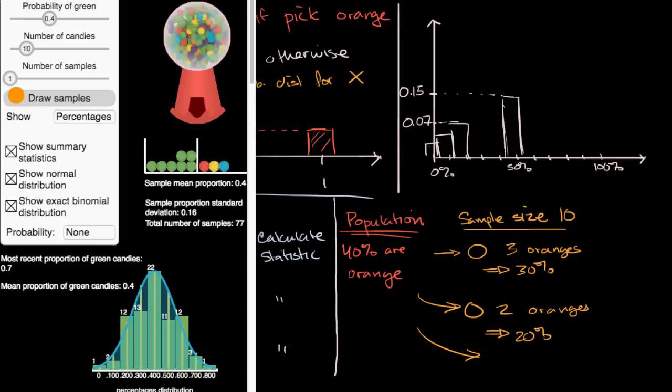And so this is after 77 samples. Notice, this is saying that out of 77 of our samples, 22 of those samples resulted in 40% of our gumballs being green. Only one of our samples had 80% of our gumballs being green.